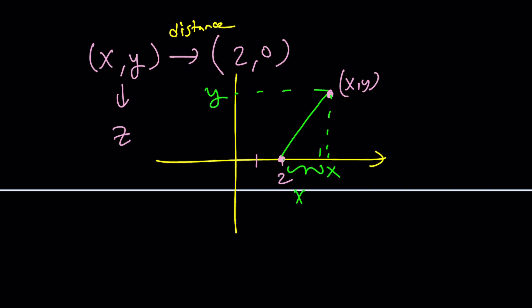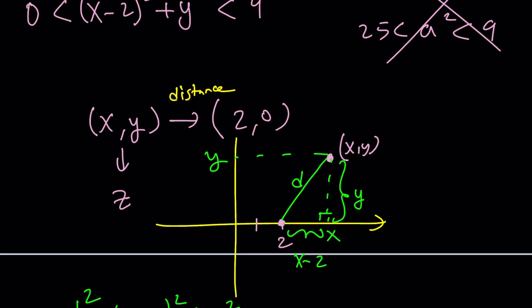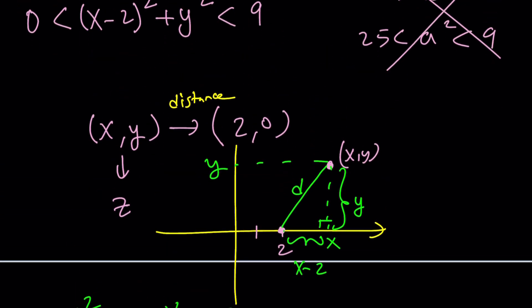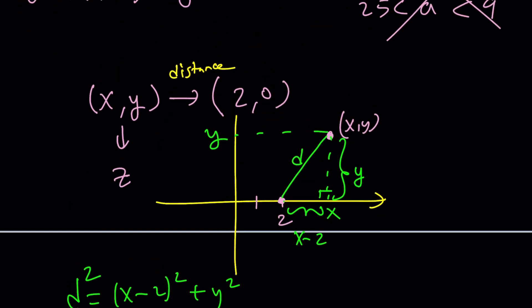So this is going to be x minus 2. This is going to be y minus 0, or just y. And from Pythagorean theorem, if you call that distance d, d squared will be x minus 2 squared plus y squared. Wow, that's kind of interesting. That's exactly what we have, right? Exactly.